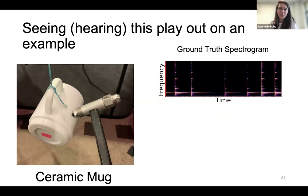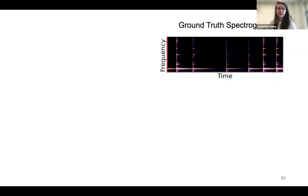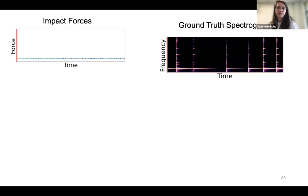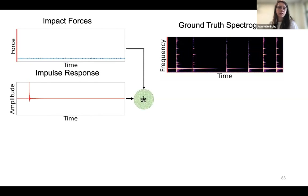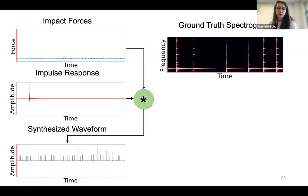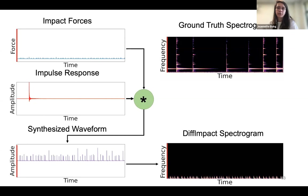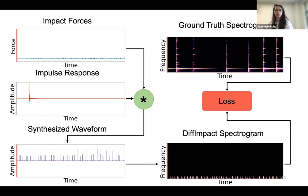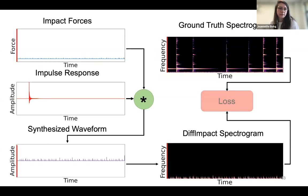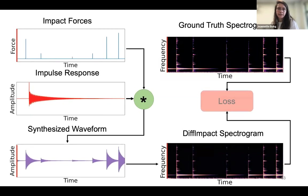On an example of a studio recording of striking a ceramic mug multiple times, we initialize random impact forces and random impulse response, convolve them to get a synthesized waveform estimate, and compute spectrogram L1 loss against the ground truth to adjust parameters via gradient descent. The model converges nicely, extracting both impact forces and impulse response — the extrinsic and intrinsic parameters. The synthesized sound is quite close to the original.